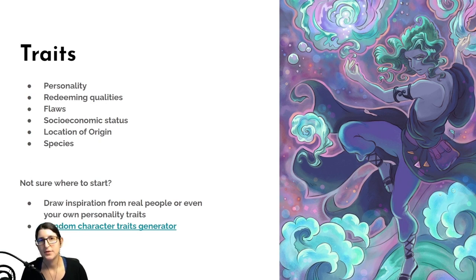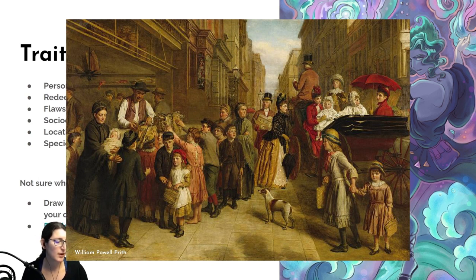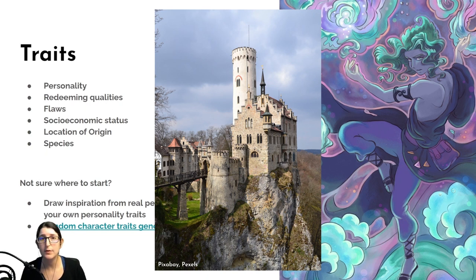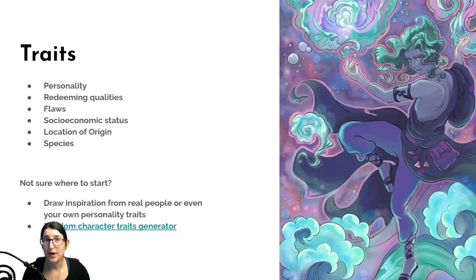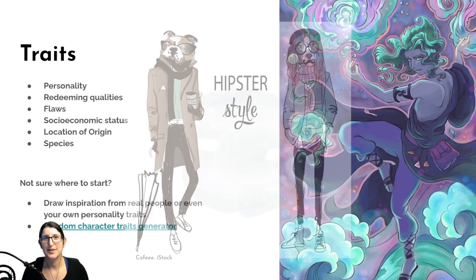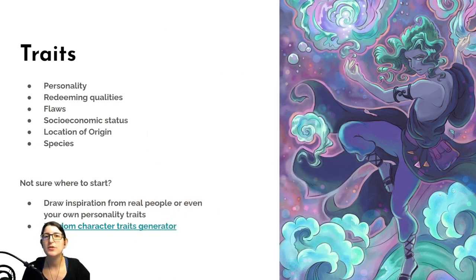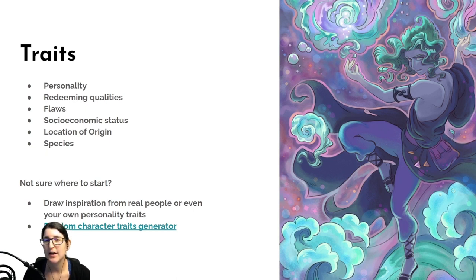What's their socioeconomic status? Are they rich, poor, or middle class? What's their location of origin? If they're from a fantasy world, what is that world like - what town are they from? If they're a historical character, what country and time period are they from? And if you're doing something other than a human, what species is it - a dog, a cat, an anthropomorphic cat? It's totally okay if you want to create a character and have no idea about all these things. If you don't want to spend time on world building, I understand - there's a tool for you that I think you'll find quite useful.